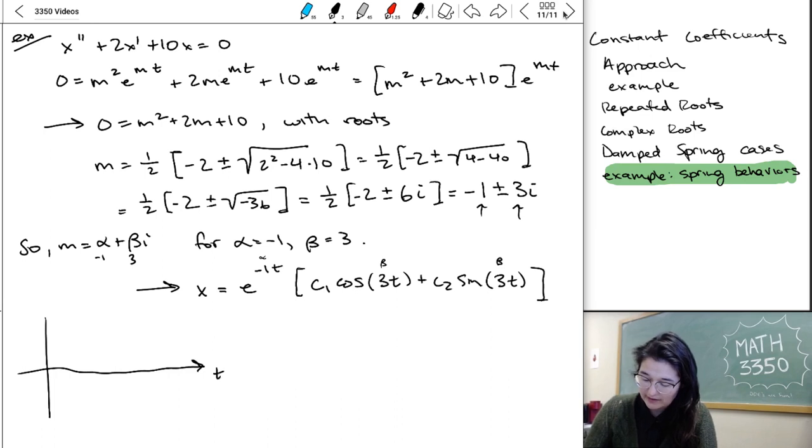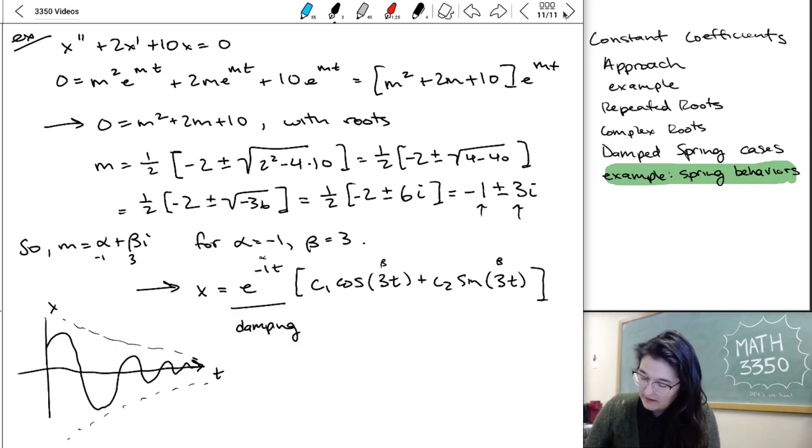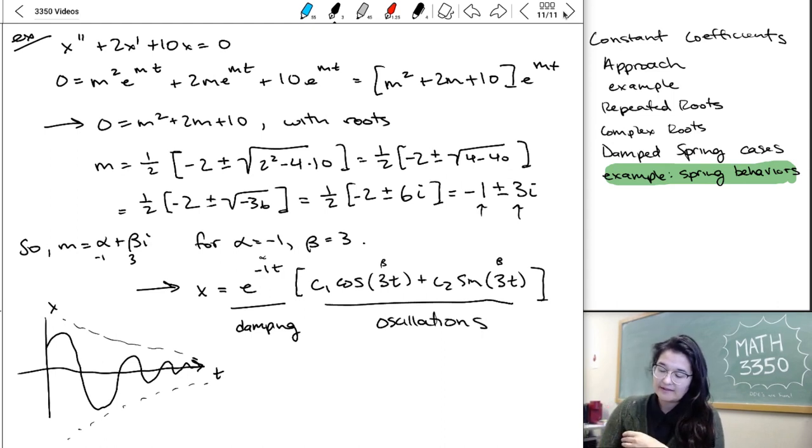And we wrote those solutions as like c1 e cosine, c2 e sine. I just pulled out the e out front because it is in both terms, so you can do that. And I really wanted to highlight what these different terms are doing to our solutions. So this solution is going to look like this. As time goes on, you start with these oscillations and they start to get more and more small. They're kind of like trapped inside this exponential funnel. That's the damping term caused by the exponential. But then these cosines and sines that come out of the purely imaginary case as well, those are our oscillations. They're what makes the spring go back and forth. And then this damping part is the part that makes it eventually stop.